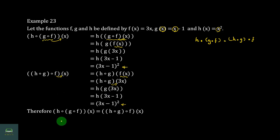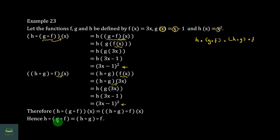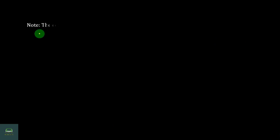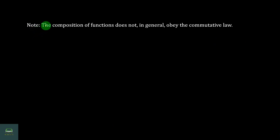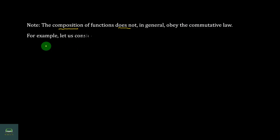We will verify that h∘g∘f is equal to the composite of (h∘g) and f. Hence the composite of h, g, and f is equal to the composite of (h∘g) and f. This demonstrates the associativity of function composition — it is a commonality of the format.